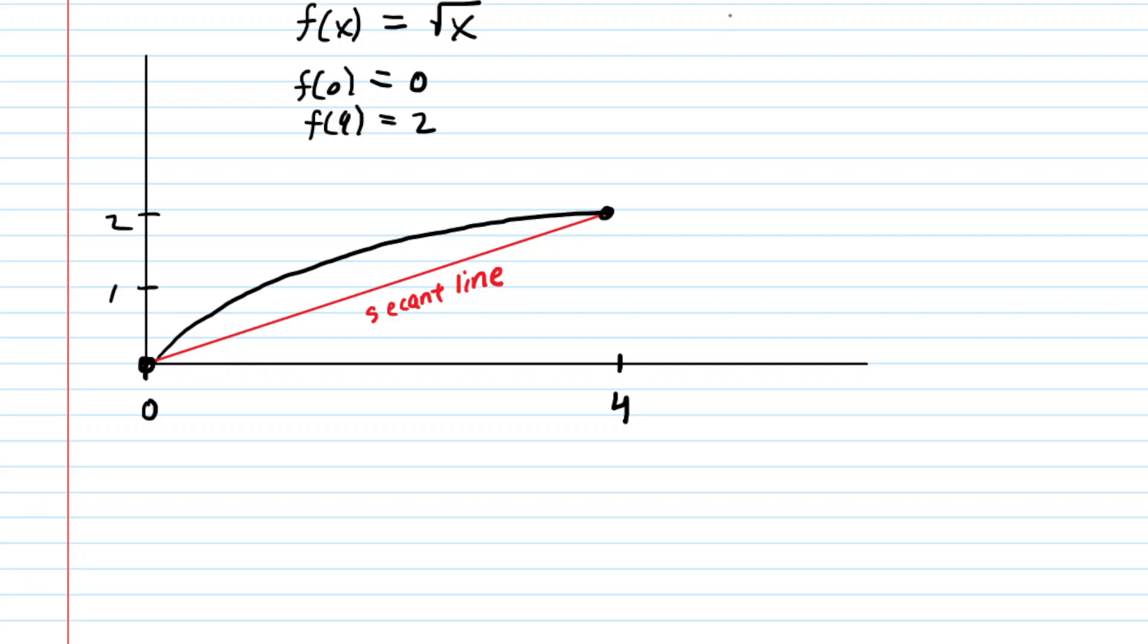Now recall that we had found the key value of c to equal 1. And if we plug 1 into our function, so we'll take f(1), we would have the square root of 1. Of course the square root of 1 is just 1. So what this means is that at the point 1 comma 1, we can plot a value there. So perhaps roughly about right there, this drawing is not perfectly to scale, but there is the point 1 comma 1.